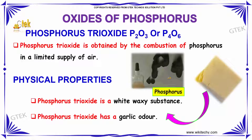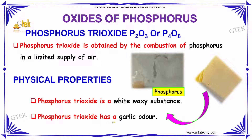Its physical properties are: it's a white, waxy substance. Phosphorus trioxide has a garlic odor.